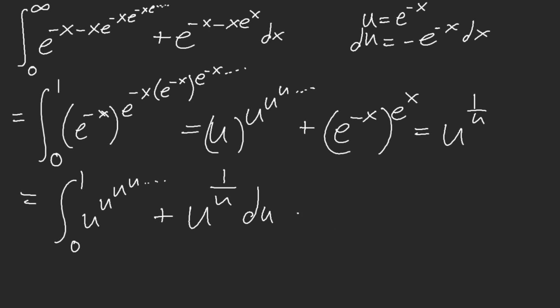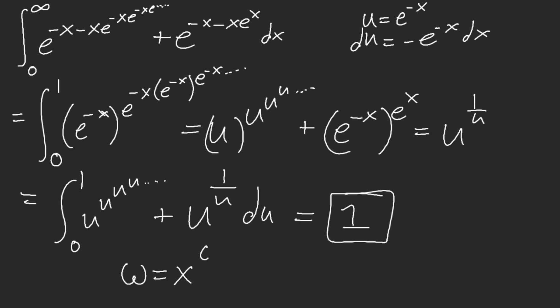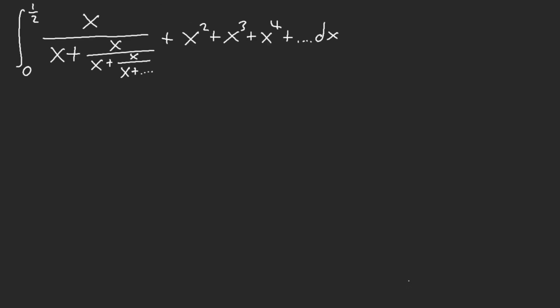That means this integral is also equal to 1. So whenever you're dealing with an infinite function and you can't solve for omega, instead try to use the inverse function. If we can't simplify or isolate omega, consider using the inverse function. In this case, the inverse of this infinite function is this other expression — so we have two different infinite functions.